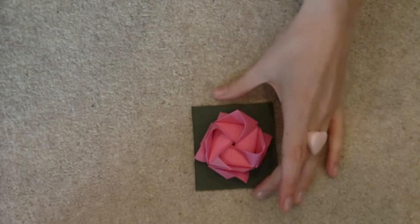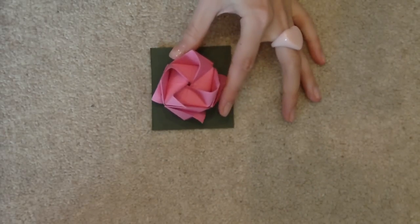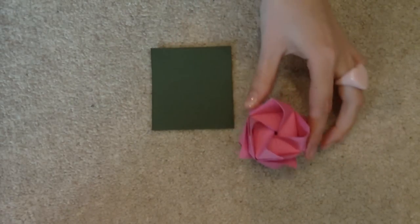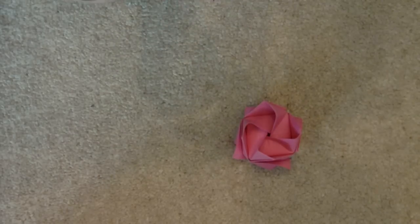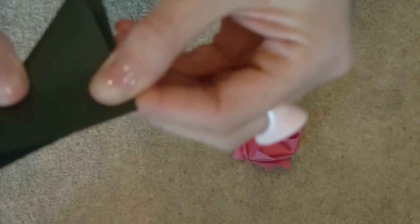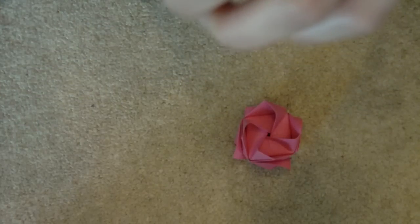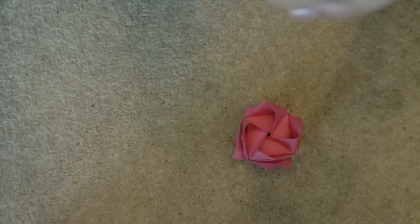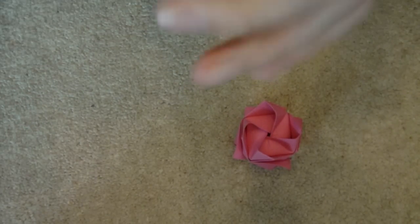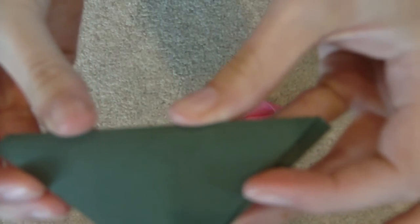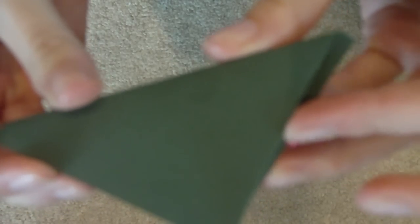Like so. So your rose can sit quite happily on there. Then what you want to do is roughly fold it point to point. And then if you folded it one way, because these aren't ever perfect squares.